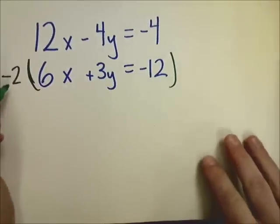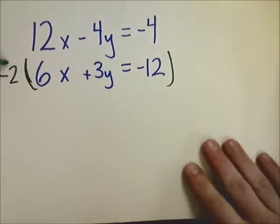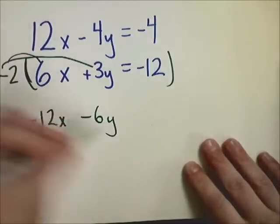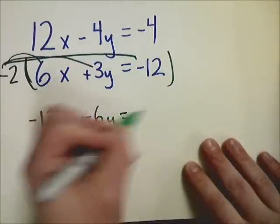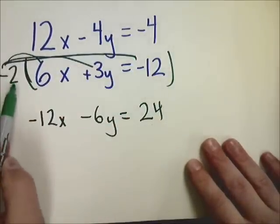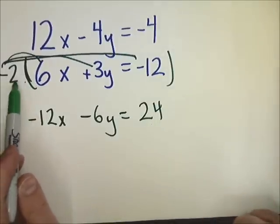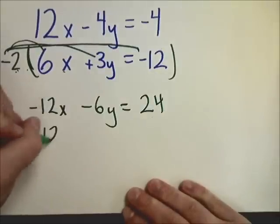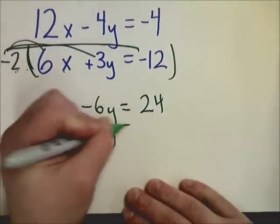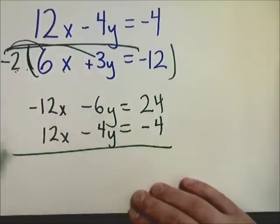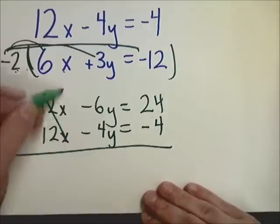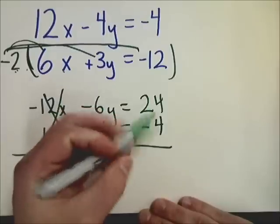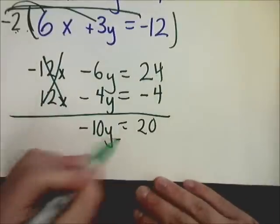So instead of having 6x plus 3y equals negative 12, I'm going to do negative 12x minus 6y plus 24. Then you put the original back on the bottom here. And since I have these opposite signs, I'm going to do this by adding. Negative 6 plus negative 4 is negative 10y. 24 minus 4 is just 20. Divide by negative 10, y's value is negative 2.